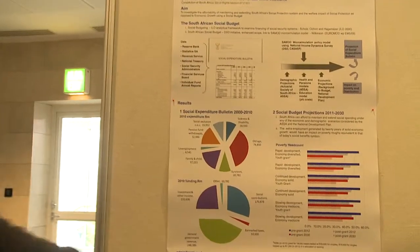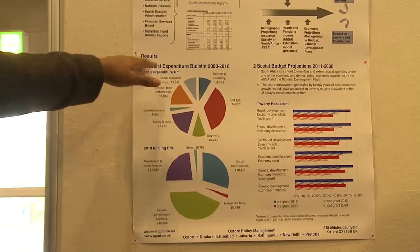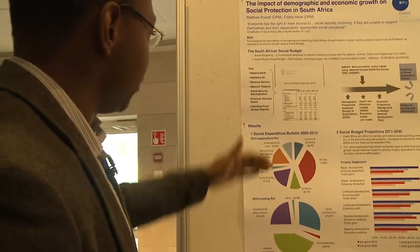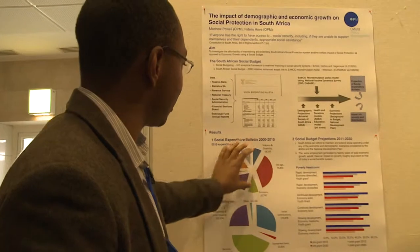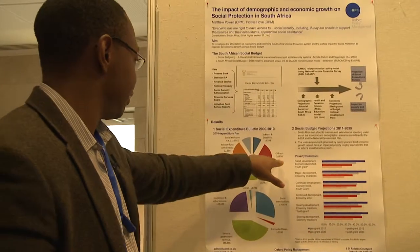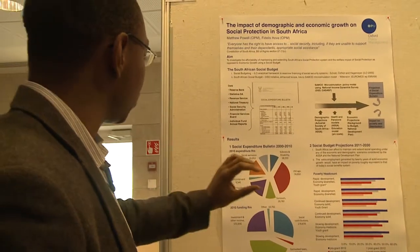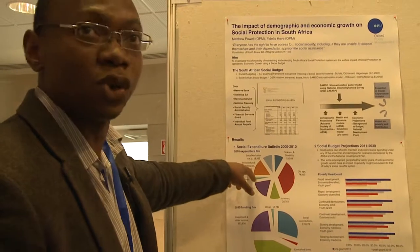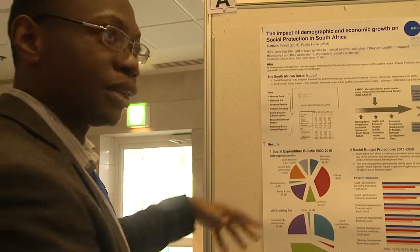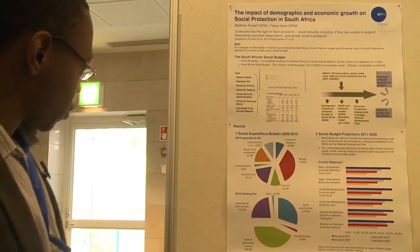The first set of charts shows expenditure — social expenditure in South Africa as shown in the social accounting system. This excludes health and education. You can see that the majority of social spending goes to the elderly, the second biggest component is spending on family and children, and there is also a large component from private pension fund withdrawals. This chart is important because it shows the interplay between tax-funded benefits and the private side of social protection.